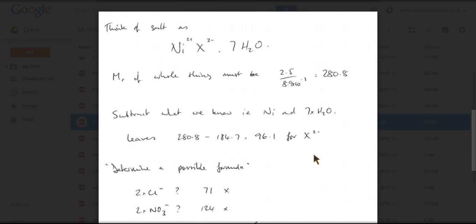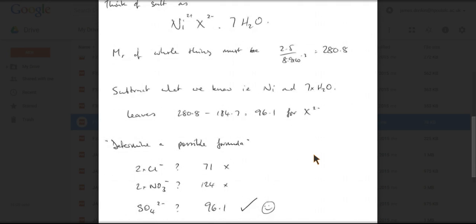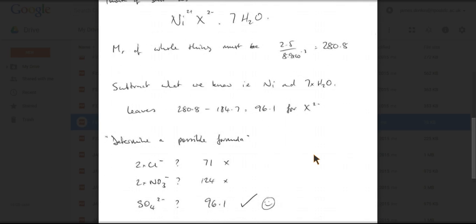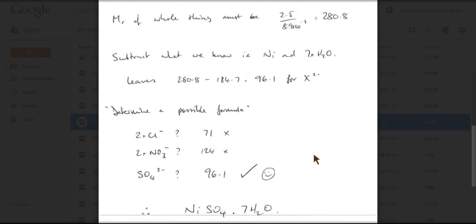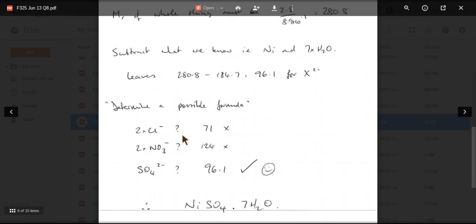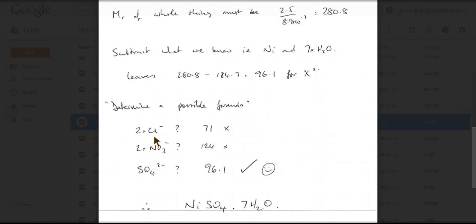So now it's a little bit of an educated guessing game to try and work out what it could be. So if you think about all the negative ions you know about, I've come up with a couple of examples, sort of trial and error really. So if it was chloride, it would have to have 2 of those. So that would give you a mass for the X2 minus part at 71. Well that's not 96.1, so that's not right. It could be 2 nitrate ions. Well that comes out at being too heavy at 124.